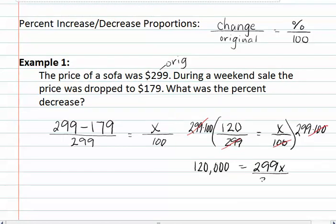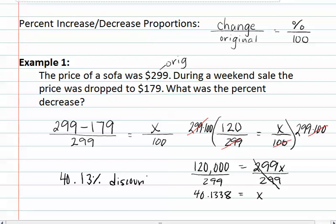We then divide both sides by 299, and we find that we have x equals 40.1338. If we round this to the hundredths, we get 40.13% discount. This is the percent discount of the sofa being reduced from $299 to $179.